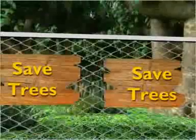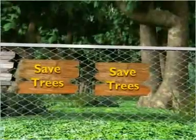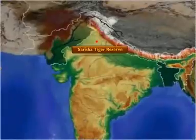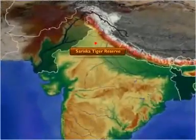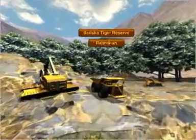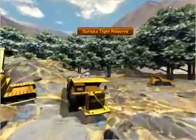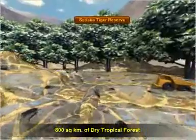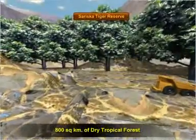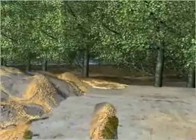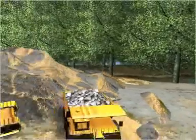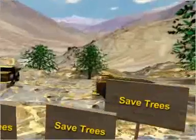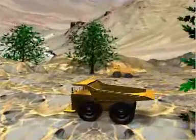Different instances can be cited to show some local communities in India that are struggling to conserve their habitats along with government machinery. One such example is the case of Sariska Tiger Reserve. The Sariska Tiger Reserve in Rajasthan is nestled amidst the Aravali hills and covers almost 800 square kilometers of dry tropical forests. This reserve faces a lot of problems due to mining in these areas. The villagers have fought against these mining activities by citing the Wildlife Protection Act.